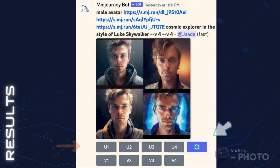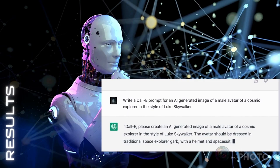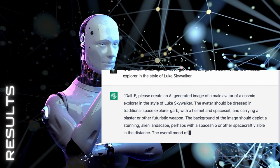Now you have 8 images to choose from. Upscale the ones you like best by selecting the U1, U2, U3, or U4 buttons. You might also ask for some additional detail in the prompt. If you need some ideas, ask an AI chatbot like ChatGPT.